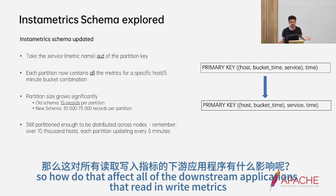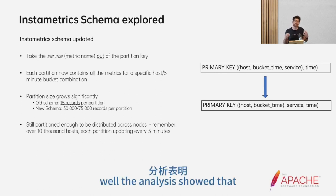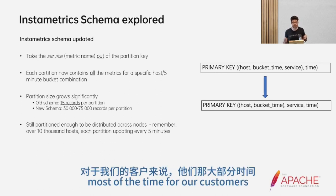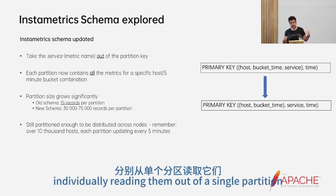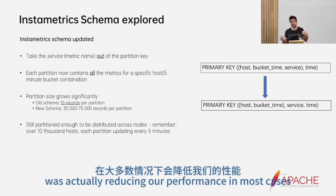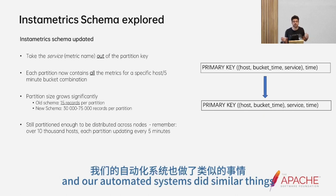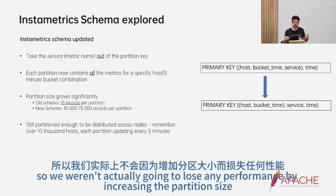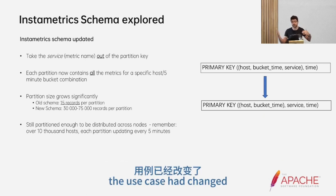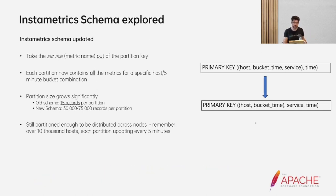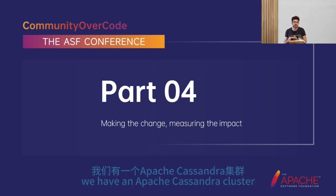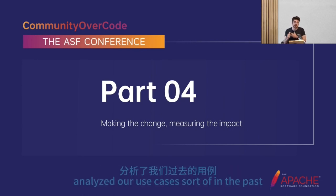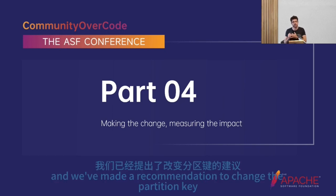How did that affect all the downstream applications that read and write metrics? The analysis showed that most of the time our customers are retrieving metrics for a single instance all at once anyway, so the fact that we were individually reading them out of a single partition and then concatenating them was actually reducing our performance in most cases. Our automated systems did similar things. So we weren't going to lose any performance by increasing the partition size — the use case had changed, which means our schema could change with it.